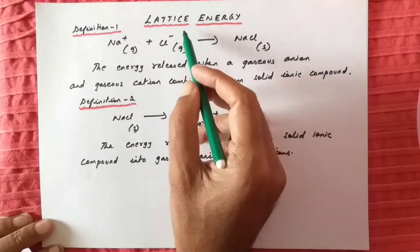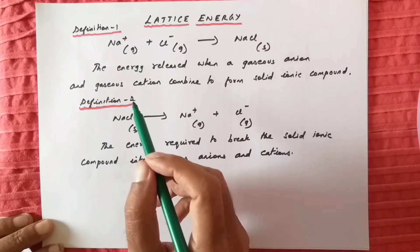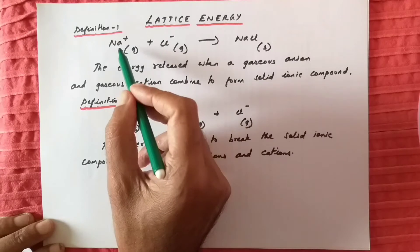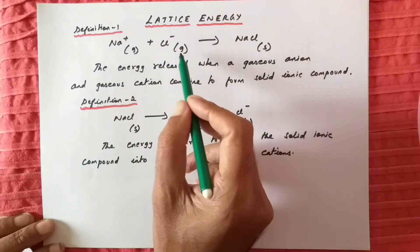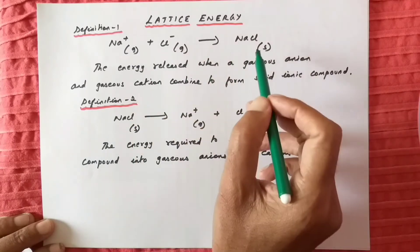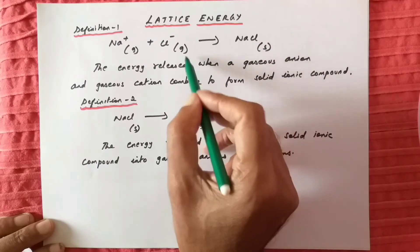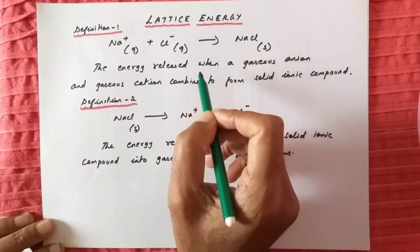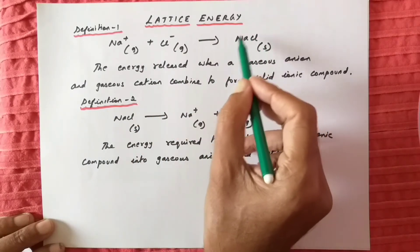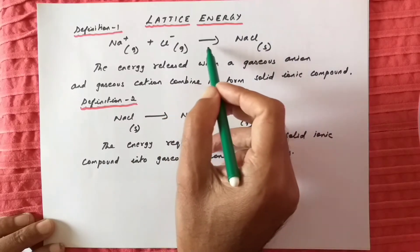In this video I will discuss about lattice energy. Two definitions are given for lattice energy. The first is when you take a gaseous cation like Na+ and an anion Cl-, these two combine to form NaCl, which is a solid ionic compound. During this process, energy will be released. When the cations and anions combine to form the solid ionic compound, energy is released, and this energy we call lattice energy.